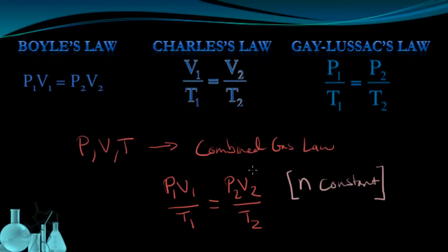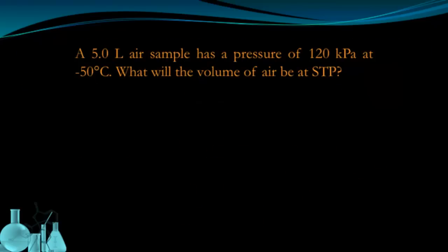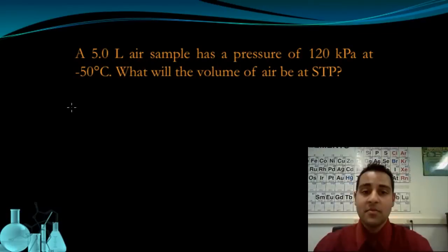So how is the combined gas law going to be more useful than the individual laws we had? Well for one, it basically shows all these relationships in one easy to remember form. And secondly, it helps us make predictions when we have two conditions changing, such as in this problem. This problem says that a 5 liter air sample has a pressure of 120 kPa at negative 50 degrees Celsius. What will the volume of the air be at STP?